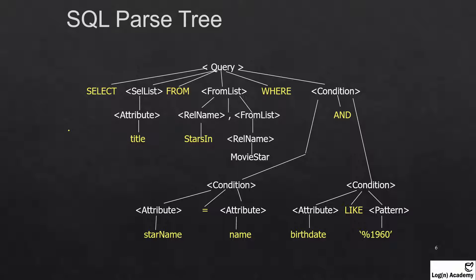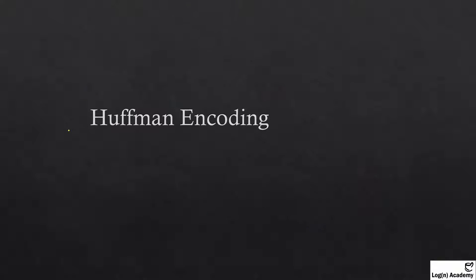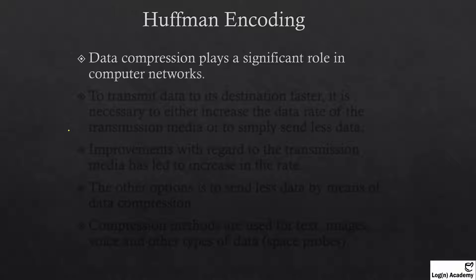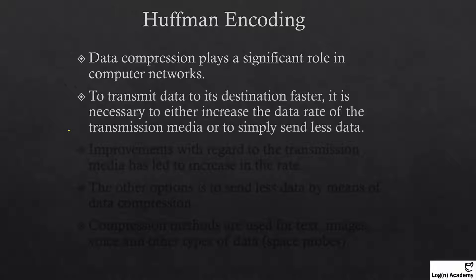It's just an example to give you some uses of binary trees and how they can be helpful. Now let's discuss Huffman encoding. Huffman encoding is a compression technique using which we can compress our data and send the compressed data to other machines or applications. Data compression plays an important role in computer networks to transfer data to its destination faster.